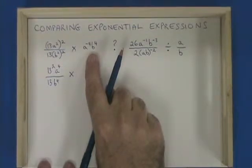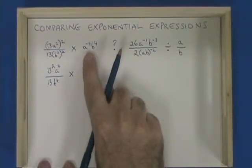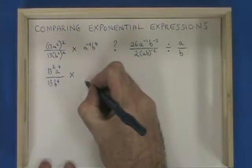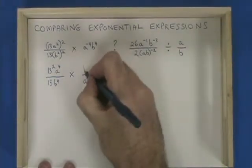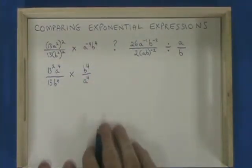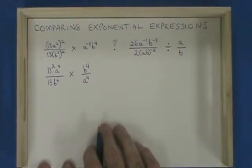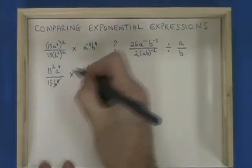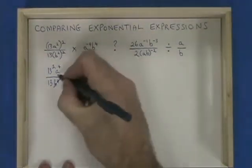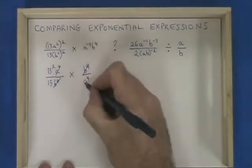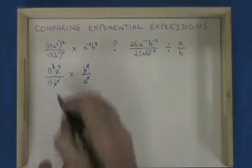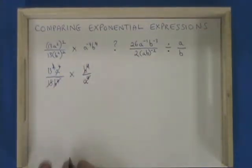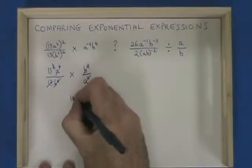In this expression, I'm going to convert a to the negative 4 into a to the positive 4 by moving it down into the denominator. b to the 4 stays in the numerator. Now when I multiply, I can do some cancelling. The b to the 4s cancel, the a to the 4s cancel, and one of the 13s on the top cancels with the 13 on the bottom. All that's left is 13.